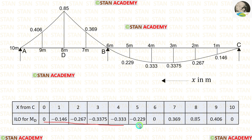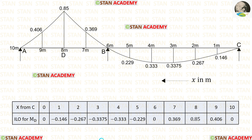From point D to point A, we use the DA formula. Instead of X, we apply 1 and then 2 to get those two values. Using the ordinate values, we can now make the influence line diagram. We are going to end this session — thank you for watching this video.